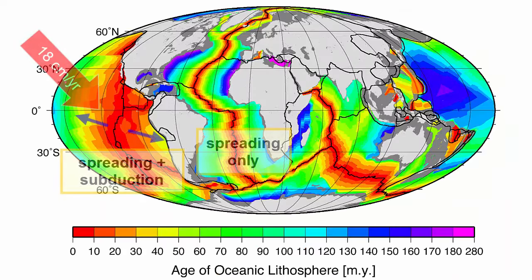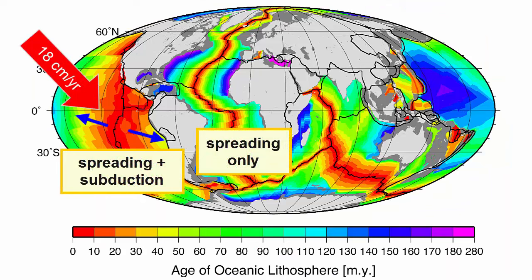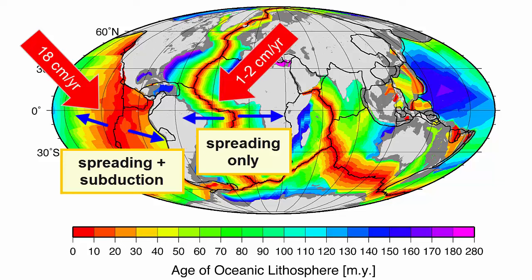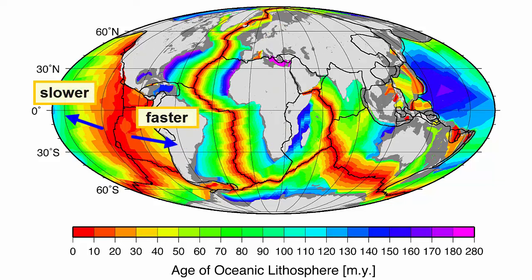Does it seem likely that seafloor spreading accompanied by subduction would move faster than seafloor spreading that has to push away continents and has no subduction to help it? Also, notice that spreading is faster on the east of the ridge. Why? We can see that the subduction zone is much closer on this side. Does that make a difference? These are all good questions to consider as we study global plate tectonics.